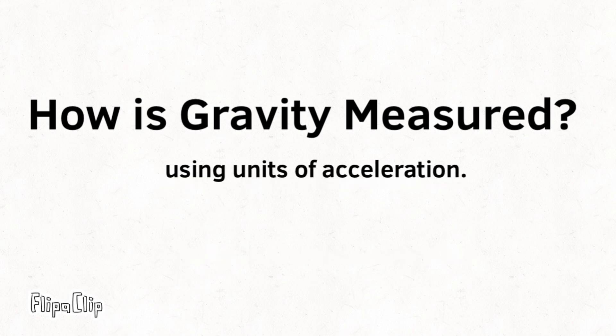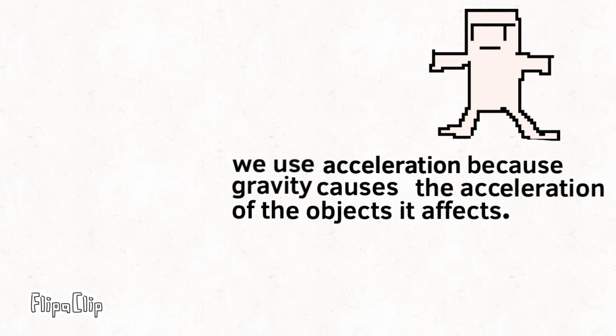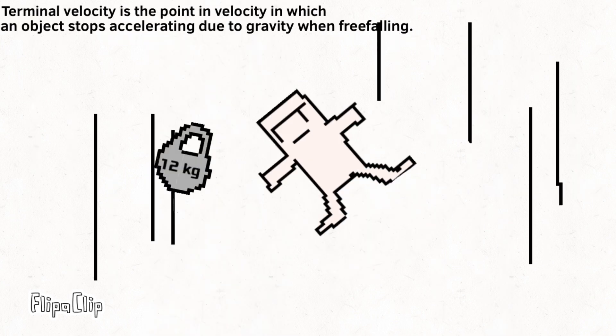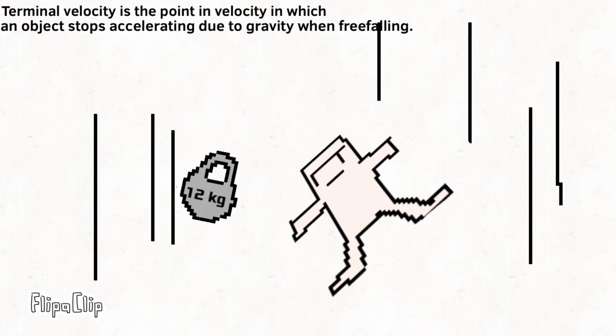How is gravity measured? Using units of acceleration. We use acceleration because gravity causes the acceleration of the objects that it affects. Terminal velocity is the point at which an object stops accelerating due to gravity when freefalling.